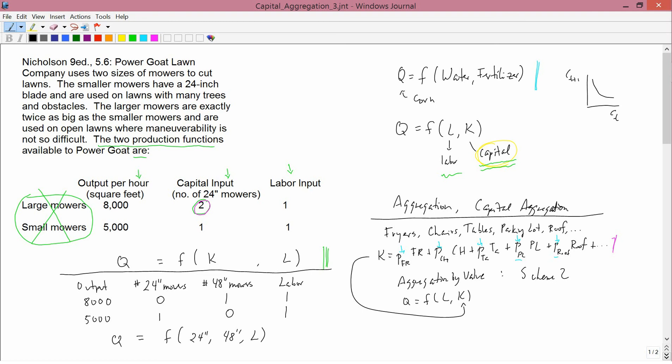What does it mean to say that a 48-inch mower is two 24-inch mowers? So all those kinds of difficult questions are completely avoided by simply not aggregating. Just write down what the production function really is in using all the... having an entry for each individual input. And then there's no problem.